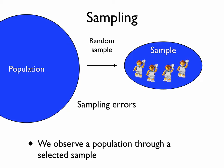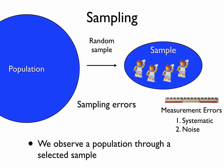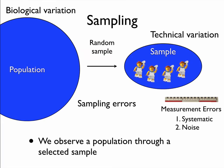Unfortunately, sampling errors are not the only kind of errors we introduce. We also have to deal with measurement errors, both in the form of systematic measurement errors due to our measurement systems not being well calibrated, and random noise due to our measurement systems not being accurate enough. We use the term technical variation for variation introduced by the measurement systems themselves, while variation of the population and within samples is called biological variation.